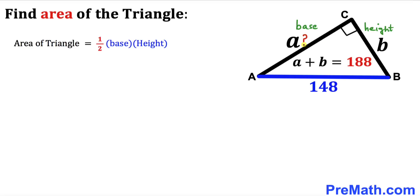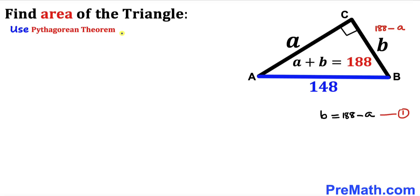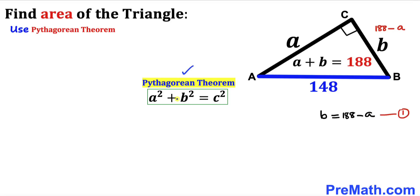In our case, this side is our base and this side is our height, so we must find the value of lowercase a and the value of lowercase b. We know that a plus b equals 188, so isolating b gives us b equals 188 minus a. Let's call this equation number one. Now we are going to apply the Pythagorean theorem on this right triangle ABC.